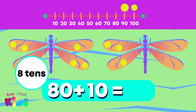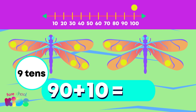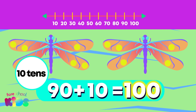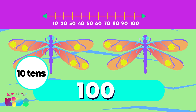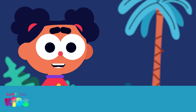Let's add one more 10. 9 tens is 90. Let's add one more 10. 10 tens is 100. 10 tens is 100, the multiples of 10. 10 tens. Great counting everybody.